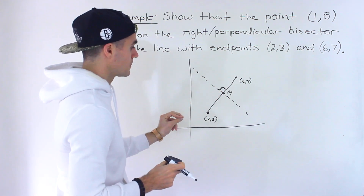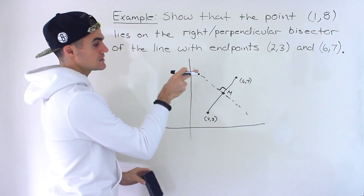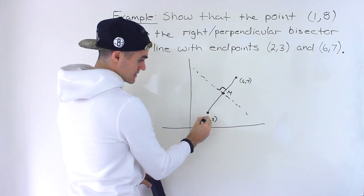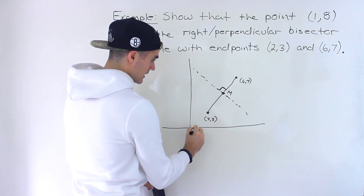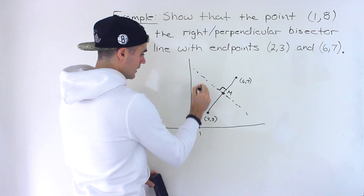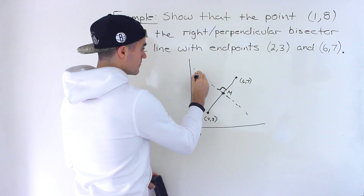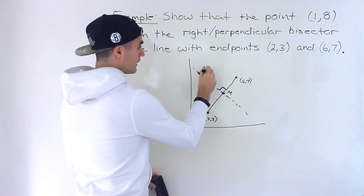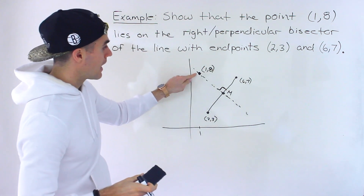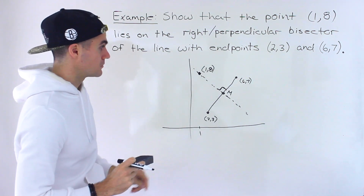That's going to be the perpendicular or right bisector of this line. What we have to do is show that the point (1, 8) lies on this line. Notice that if this is an x value of 2, then an x value of 1 is over here, and we have to show that the point (1, 8) is going to lie on that perpendicular bisector.